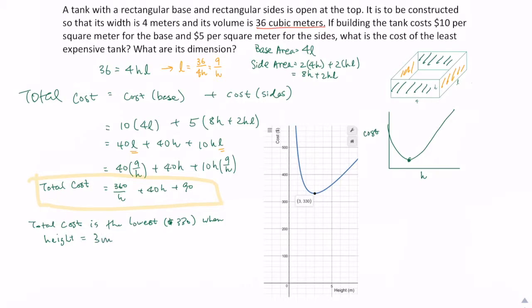Once we have the height, we can figure out other things such as our length, because we knew earlier that length is 9 over h. By substituting the 3 into the h, we have 9 over 3, which is 3 meters as well. So that means our box, the dimension of our box, would be 3 times 4 (length times width) times our height, which is 3. They're all in meters.